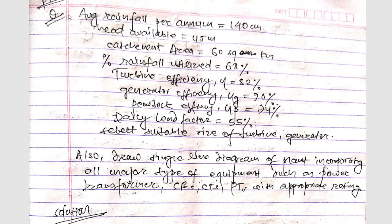Here we have given the data as average rainfall per annum given as 140 cm and the height available is given as 45 meters. The catchment area is 60 square kilometers. Similarly, the percentage range for utilized is given as 68%. The turbine efficiency will be 82%, generator efficiency given as 90%, penstock efficiency given as 24%, and the daily load factor is given as 55%.